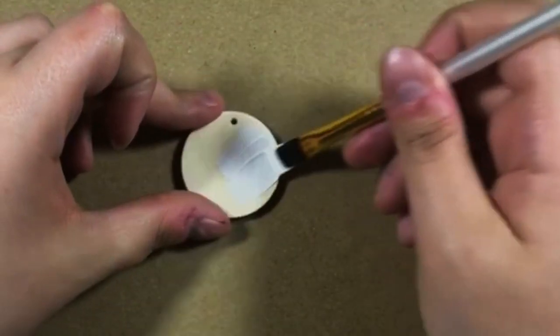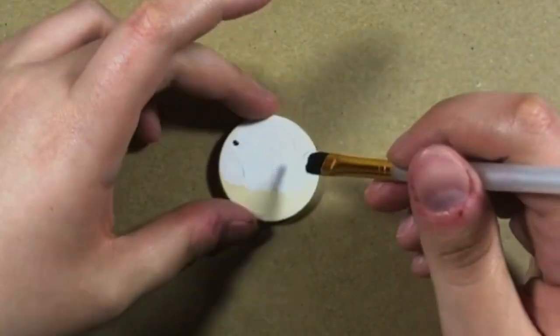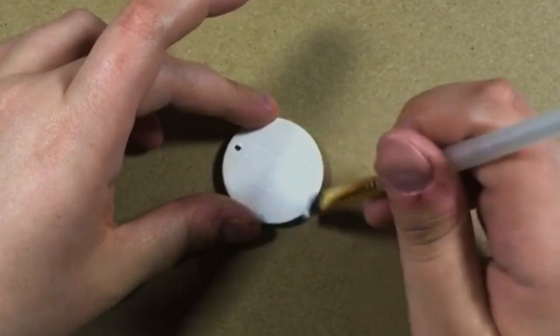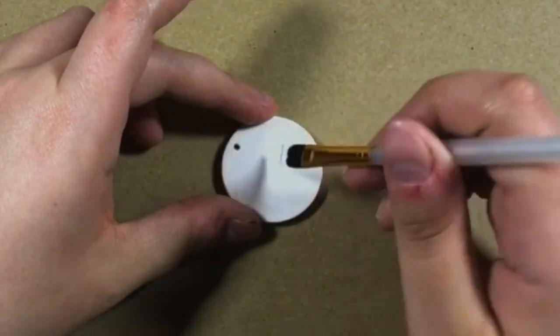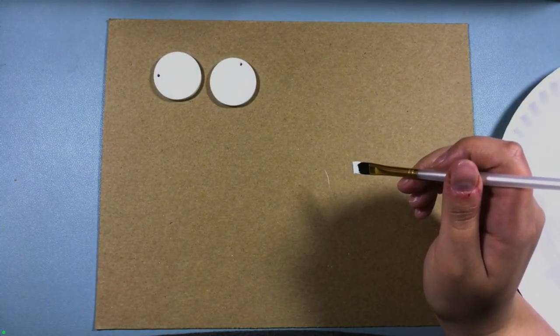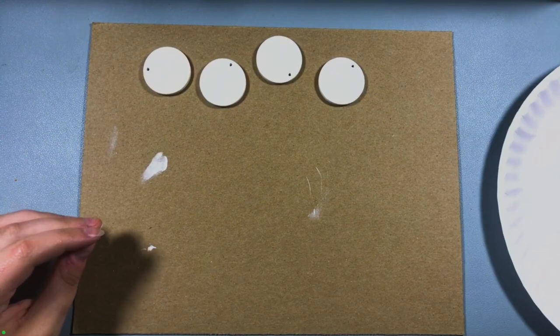Now it's time to gesso. I have had this Liquitex bottle of gesso for like a year now and I still haven't gone through it all yet. I chose to do four keychains so they each got gessoed before I started painting the first one.